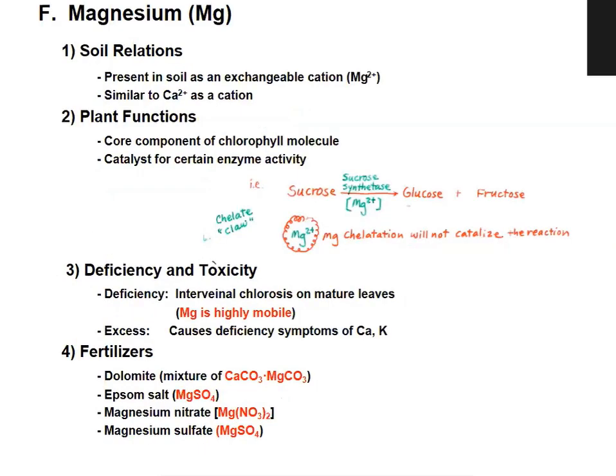The next secondary macronutrient is magnesium. Its function in the plant is as a core component of the chlorophyll molecule — it is the only element required in the synthesis of chlorophyll. It is also a catalyst for certain enzymatic activities.